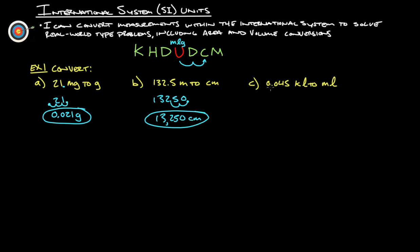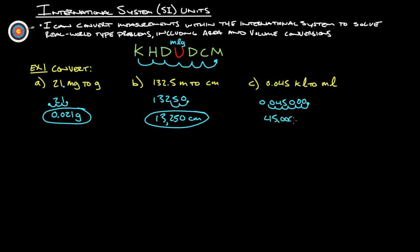Example C: 0.045 kiloliters to milliliters. Here's kilo and here's milli, so we're going way over — one, two, three, four, five, six spots to the right. Take 0.045, move the decimal six spots to the right, and fill all empty spots with zeros. We don't need the first two zeros anymore — they were just holding the place. So we get 45,000 milliliters. Therefore, 0.045 kiloliters is the same as 45,000 milliliters.